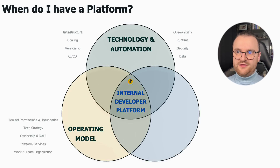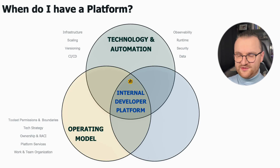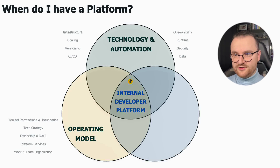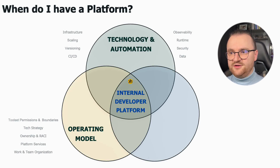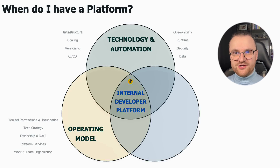An operating model for a platform is an agreement on who is responsible for what in each area of the software delivery lifecycle. There will be platforms where the platform team is responsible for almost everything besides business logic, implementation, and business operations — even CI/CD included. But there will also be platforms where the stream-aligned team only needs templates to build their own environment without cognitive load. The decision on the operating model should be a result of the cognitive load analysis.